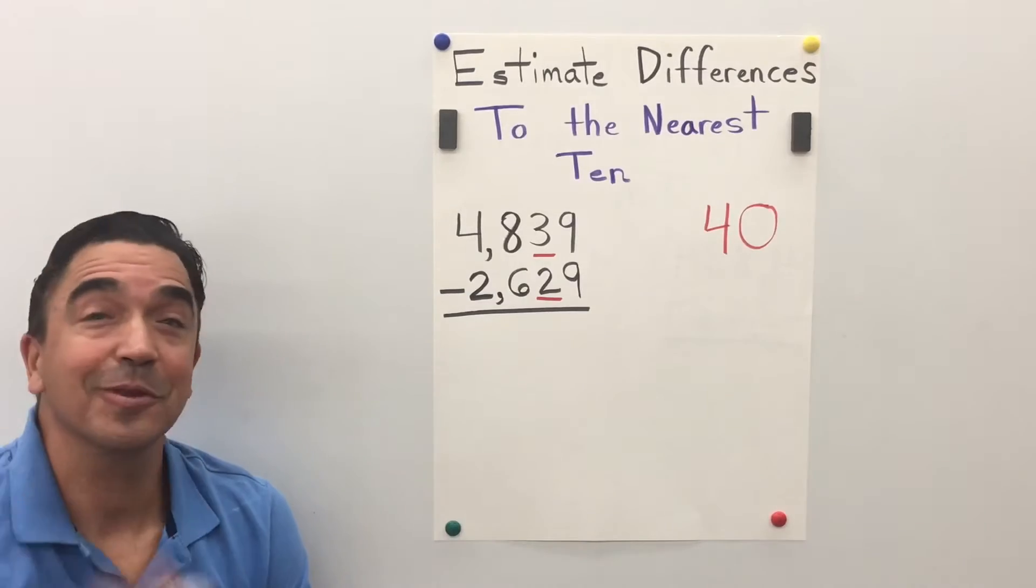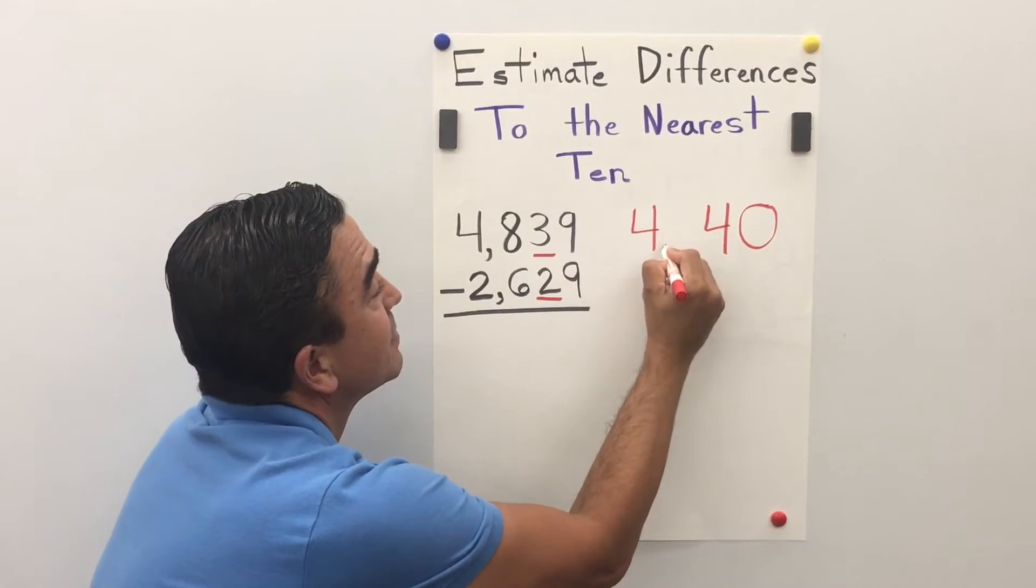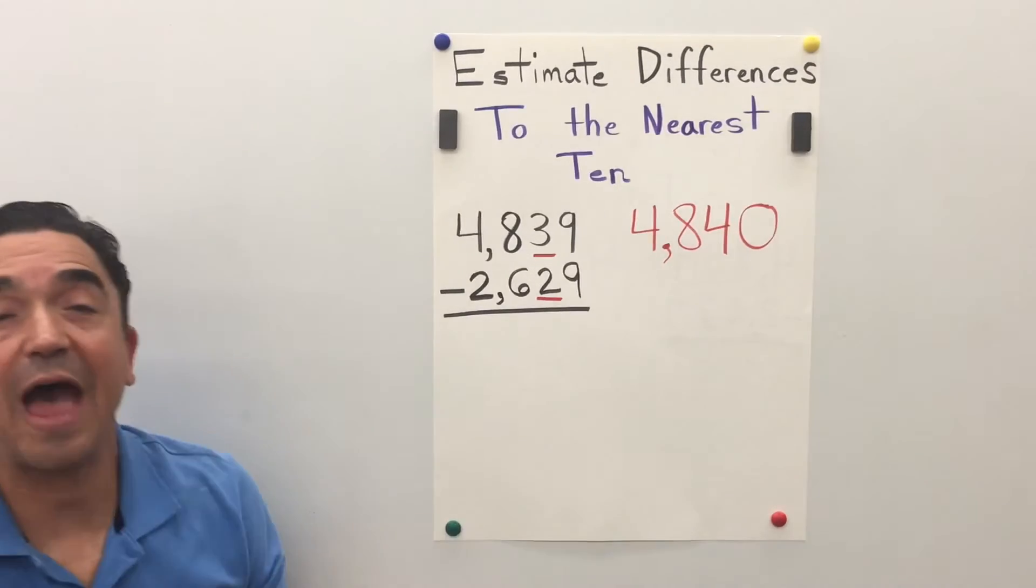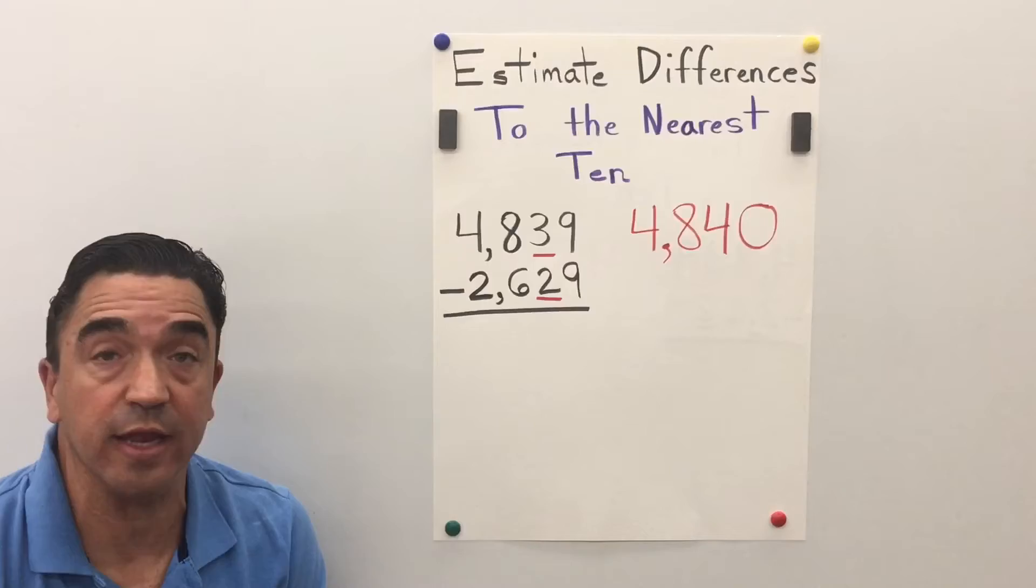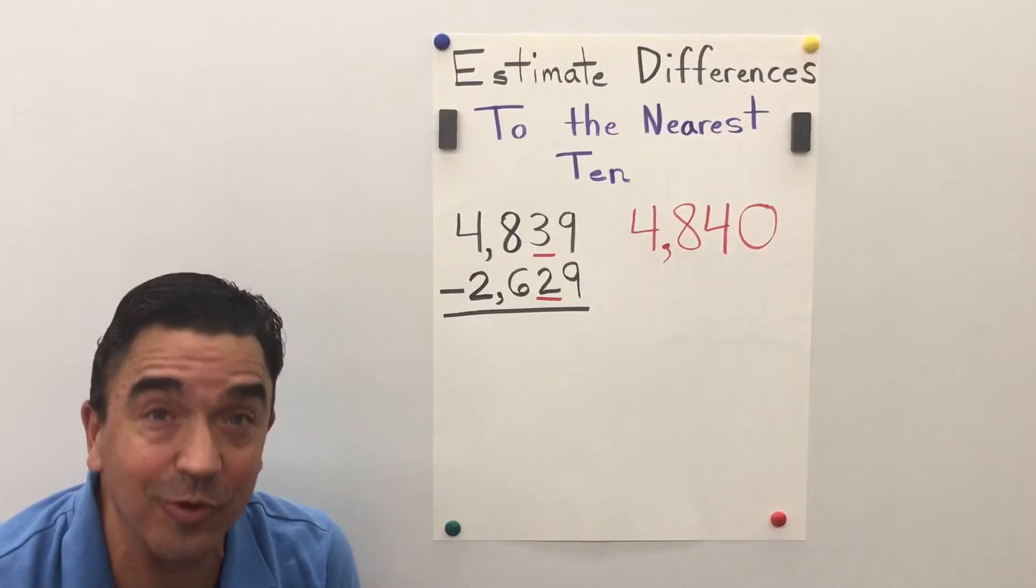The four and the eight, we just drop them. 4,839, rounded to the nearest ten, is 4,840.